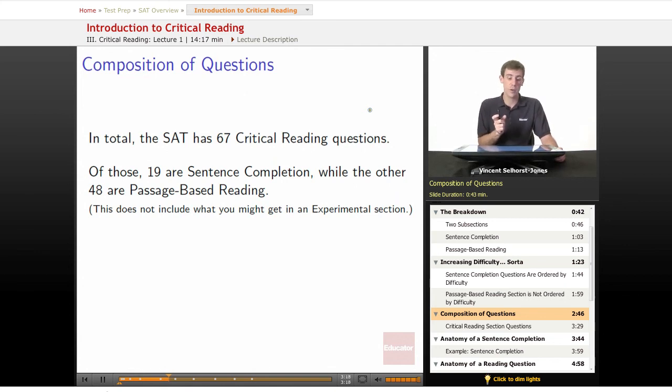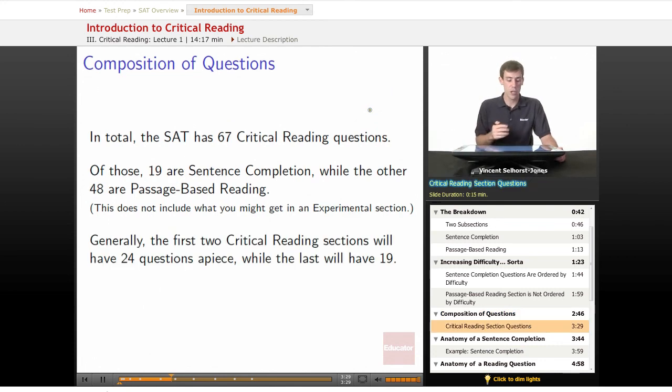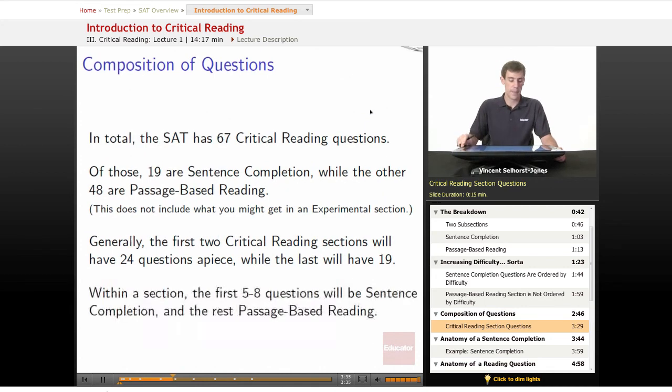So 67 critical reading, 19 will be sentence completion, 48 passage-based reading. So for the most part it's going to wind up testing your reading comprehension but vocabulary is an important element of this. Generally the first two critical reading sections will have about 24 questions and the last is going to have 19. Also within a section the first 5 to 8 questions are going to be sentence completion and the rest of those will be passage-based reading.